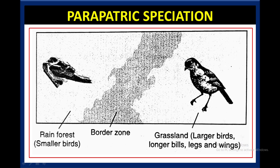You can see this is one species — a rainforest smaller bird — and this is another species — a grassland larger bird. They are actually sharing a border zone, which is called the reproductive zone. They come into this reproductive zone and mate with each other. During mating, gene flow occurs so that parapatric species are formed in this border zone. Due to the gene flow between the two different species, new variation comes and they are called hybrid species.